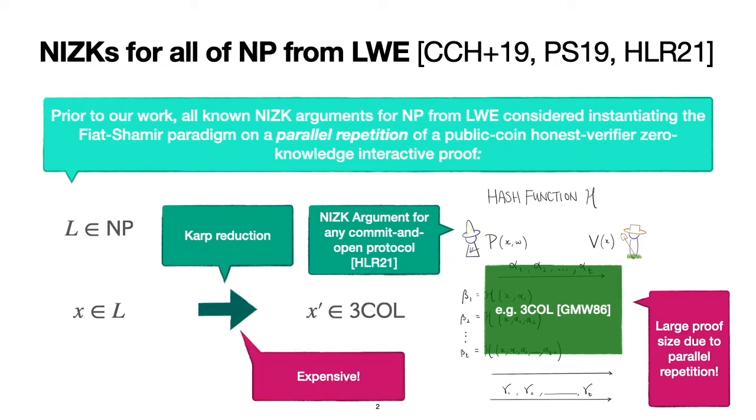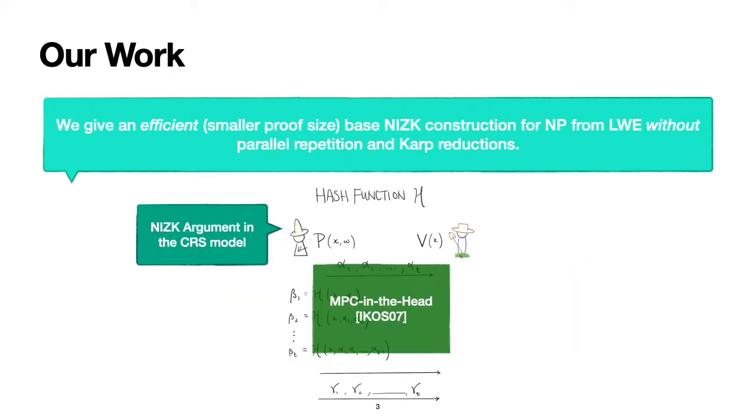Moreover, this Karp reduction is in general computationally expensive. In our work, we give an efficient base NIZK construction for NP from LWE without parallel repetition and Karp reductions.